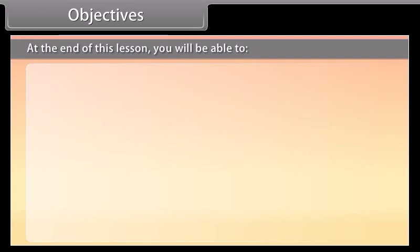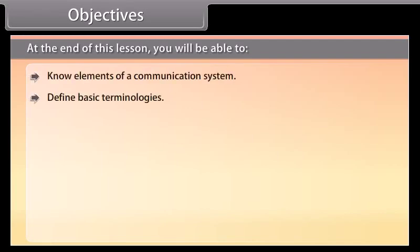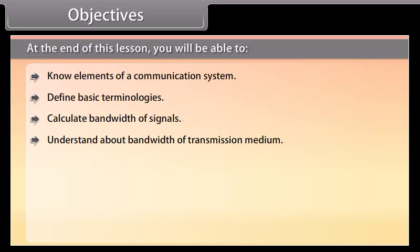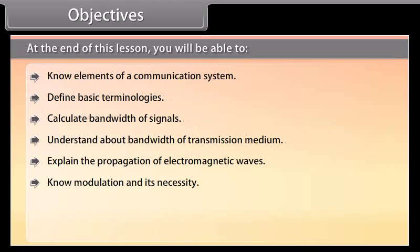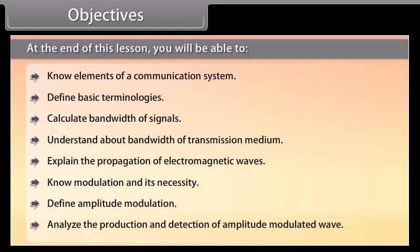Objectives: At the end of this lesson, you will be able to know elements of a communication system, define basic terminologies, calculate bandwidths of signals, understand bandwidth of transmission medium, explain the propagation of electromagnetic waves, know modulation and its necessity, define amplitude modulation, and analyze the production and detection of an amplitude modulated wave.